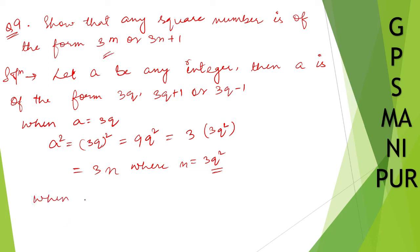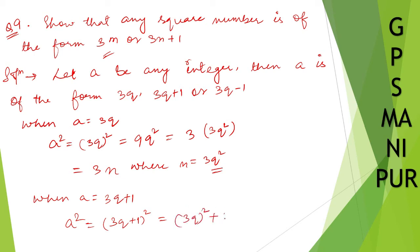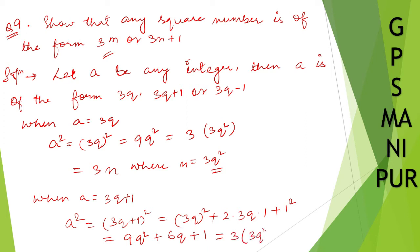When a is equal to 3q plus 1, a squared equals (3q+1)² which expands as 9q² plus 6q plus 1. Taking 3 common from the first two terms gives 3(3q² + 2q) plus 1.